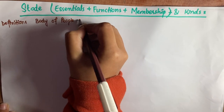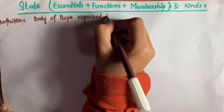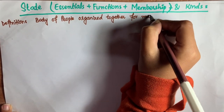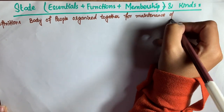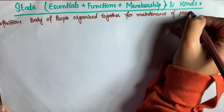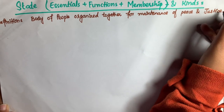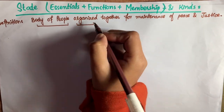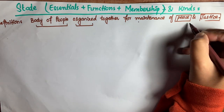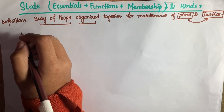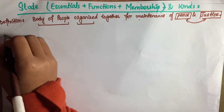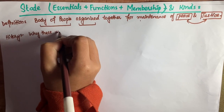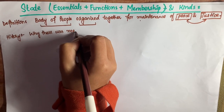Moving towards the definition of state, we can define state as a body of people organized together for maintenance of peace and justice. According to this definition, state consists of a body of people who are organized together to maintain peace and justice in society.